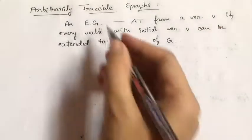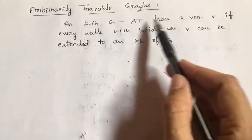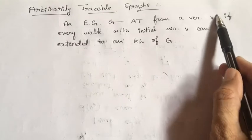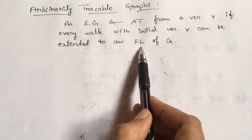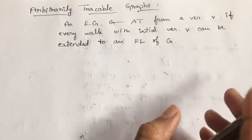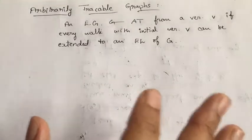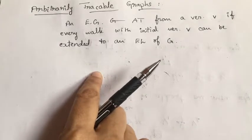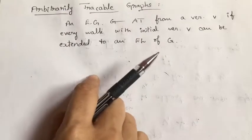If I have an Euler graph G and consider any walk starting from vertex V, it should be extendable to form an Euler line. We normally say a graph is arbitrarily traceable if it is arbitrarily traceable from every vertex — whatever the starting vertex may be, the graph has to be arbitrarily traceable from it.